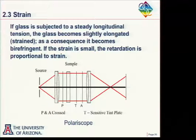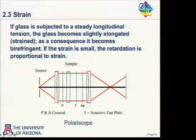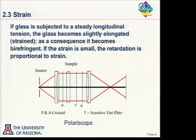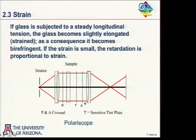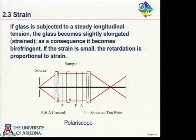You can also insert a compensator such as a Babinet compensator, where you adjust the birefringence to cancel out the birefringence from the sample, and from that determine exactly how much birefringence the sample has. Birefringence is expressed in units of nanometers per centimeter, normalized to the sample thickness — so units like nm/cm of thickness.